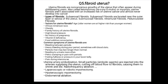Common symptoms of uterine fibroids include: bleeding between periods, heavy bleeding during your period sometimes with blood clots, periods that may last longer than normal, pelvic cramping or pain with periods, feelings of fullness or pressure in the lower belly, and pain during intercourse. Diagnosis is done through abdominal ultrasound, pelvic ultrasound, endometrial biopsy, hysteroscopy, hysterosalpingography, and laparoscopy.